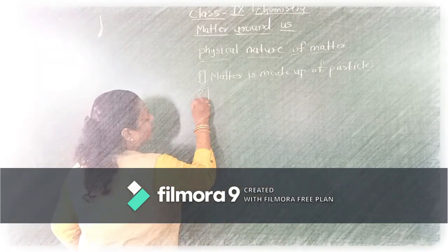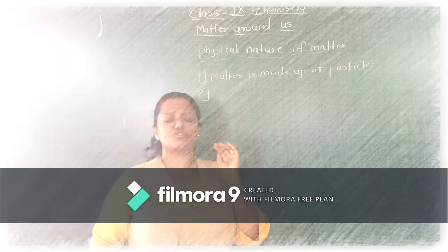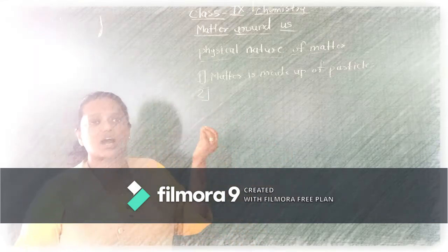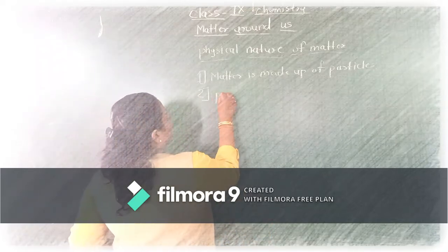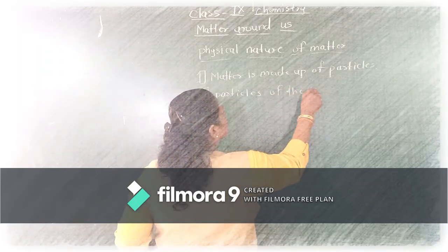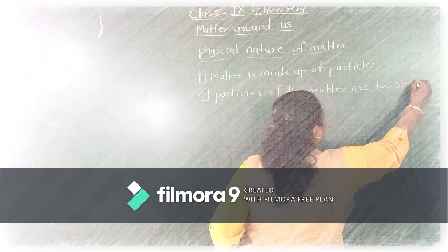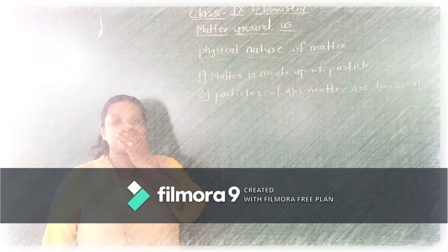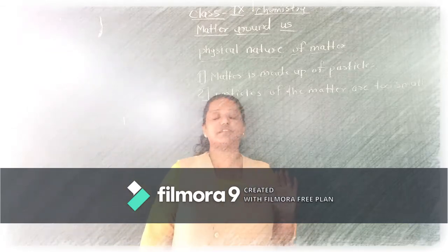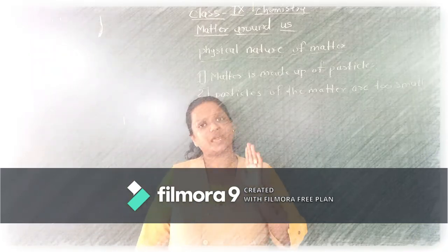The second point related to the physical nature of matter is that the particle size is too small. The point is: particles of matter are too small. In your textbook on the first page, before the activities, it is given how the particles of matter are. You may read the textbook as well.